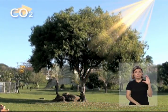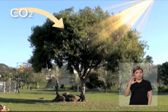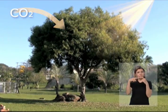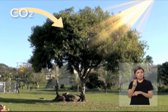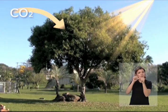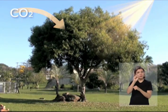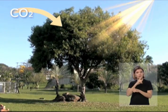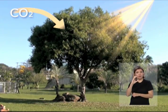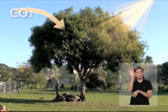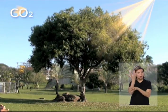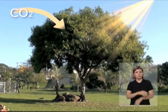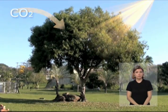O gás carbônico é captado pelas folhas, através de pequenas estruturas presentes nelas, chamadas de estômatos. O gás carbônico é produzido durante a respiração celular e durante a combustão.